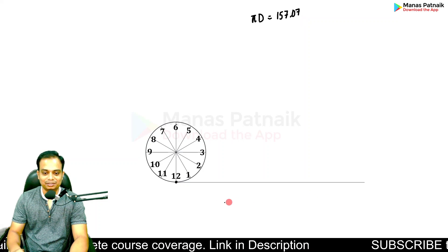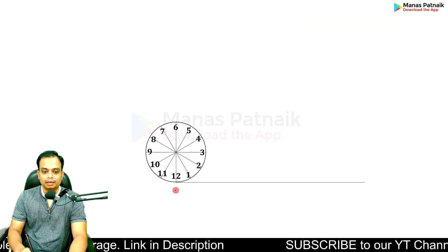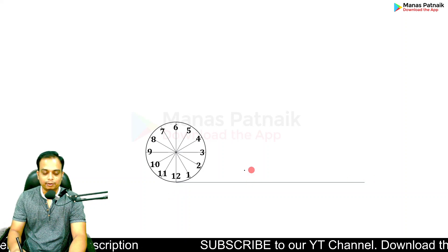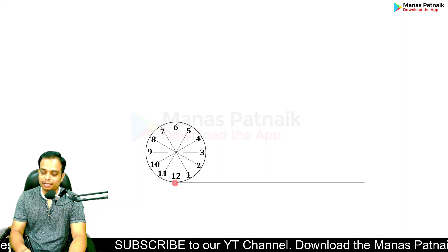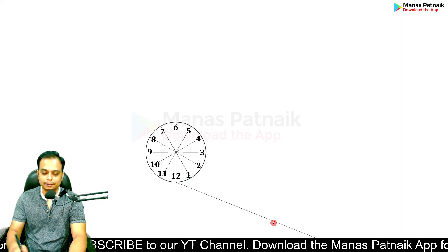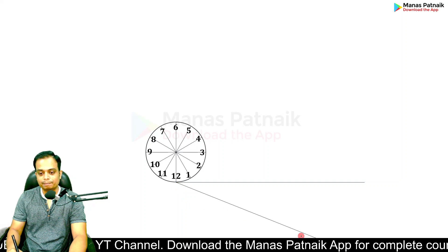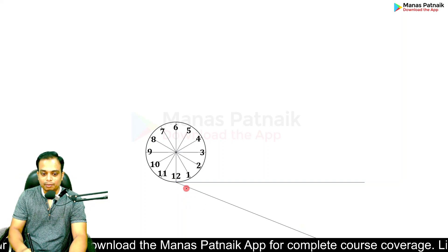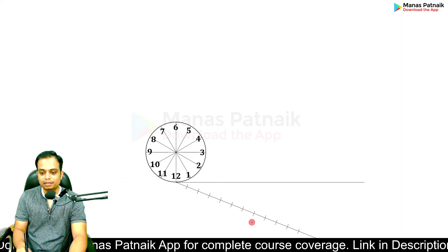Now our objective is to divide this line into 12 equal parts. For that, starting from this very point, randomly make a line at any angle of any random length. Then you need to make points—keep a scale over here and at equal intervals of 10 millimeters keep on marking points. I'm making arcs; you can make points. How many? 12 points.